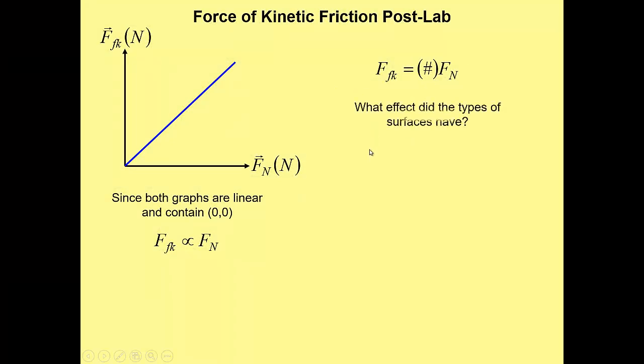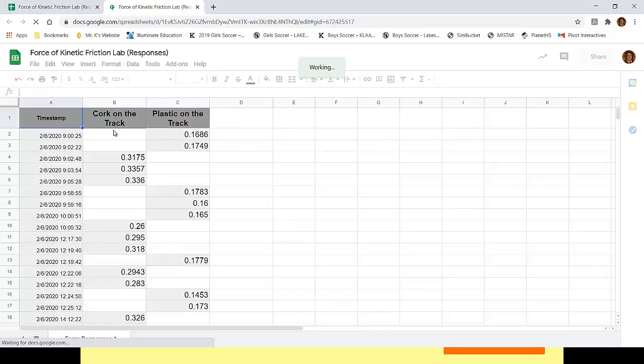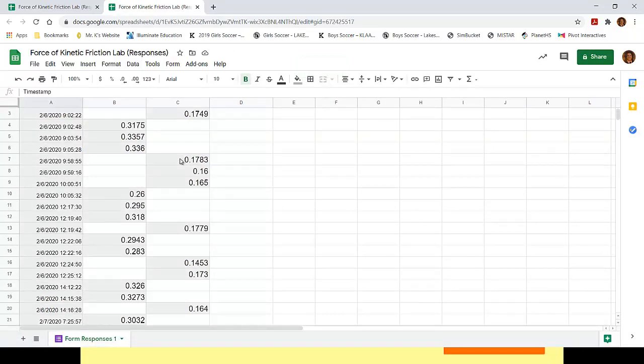But now let's check out the slopes, right. And in particular, what effect did it have that half of the tables had a tray that had cork on your track, and half of you had a tray that had plastic on the track, different surfaces? Well, let's look at the results. So over here we've got slopes for cork on track, and over here plastic on track. And as we go down, you can see that definitely they're different.